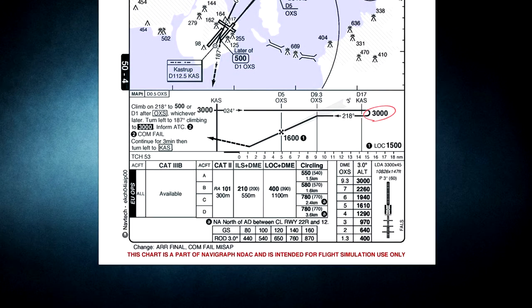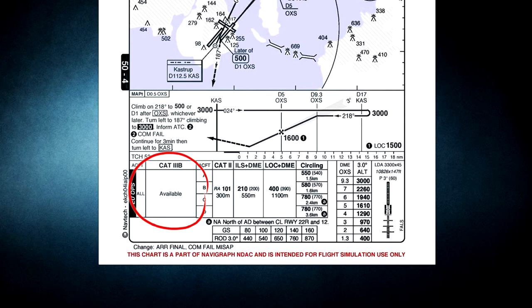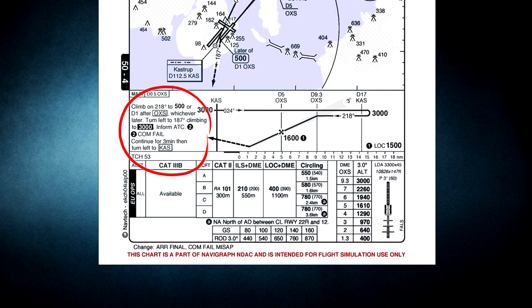We will capture the ILS at 3,000 feet at 9.3 DME. Final approach fix is at 1,600 feet. Jumping down to the minima, we see that Category 3 Bravo is available, which doesn't include a decision height; however, most companies require at least 50 feet radio altitude, so that's what we're going to use. What's really important for us today is the missed approach, which tells us to climb on a heading of 218 degrees to 500 feet or 1 DME after the ILS station Oscar X-ray Sierra, whichever is later.